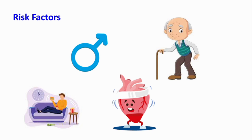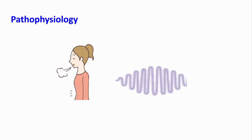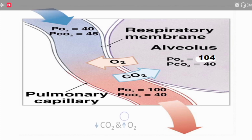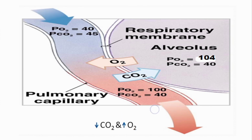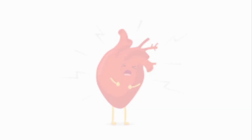Now let's discuss the pathophysiology. First, the person hyperventilates. Due to this hyperventilation, too much carbon dioxide is blown from the blood, while at the same time oxygen enters the blood. In these patients the basic defect is in the heart.